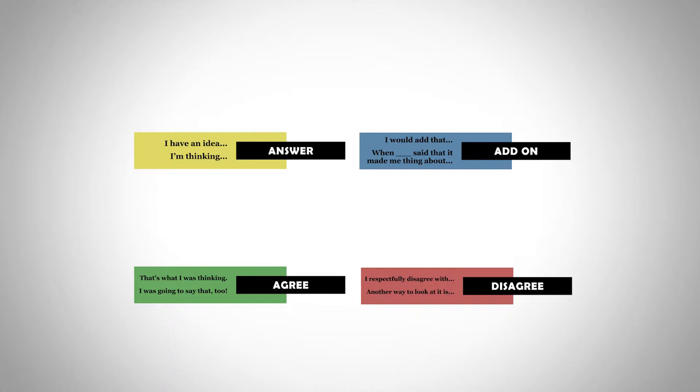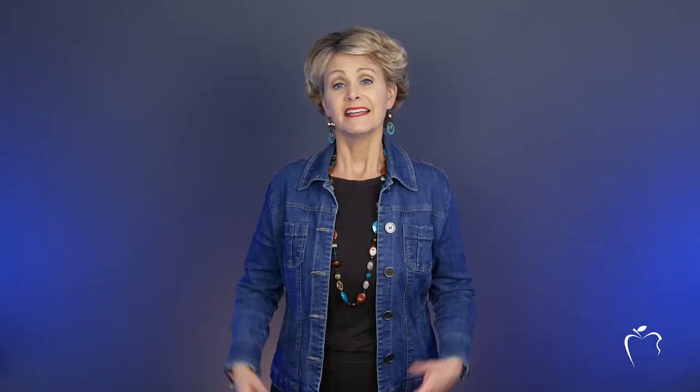Introduce each talk move one at a time, and you might add in hand signals. Instead of simply raising your hand to give an answer or to point out you disagree, students might demonstrate their thinking with different hand signals. With hand signals, the teacher knows who's agreeing and thinking similarly, who's going to deepen the conversation, versus those taking it in a new direction.